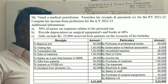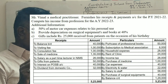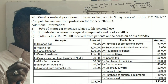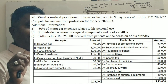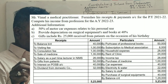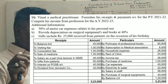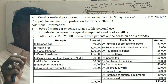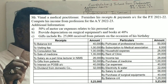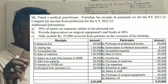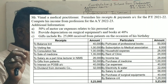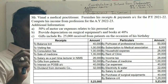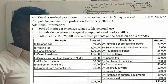Question note: Mr. Vimal, a medical practitioner, furnishes his receipts and payments account for the previous year 2021-22. Compute his income from profession for the assessment year 2022-23. Additional information is also provided.